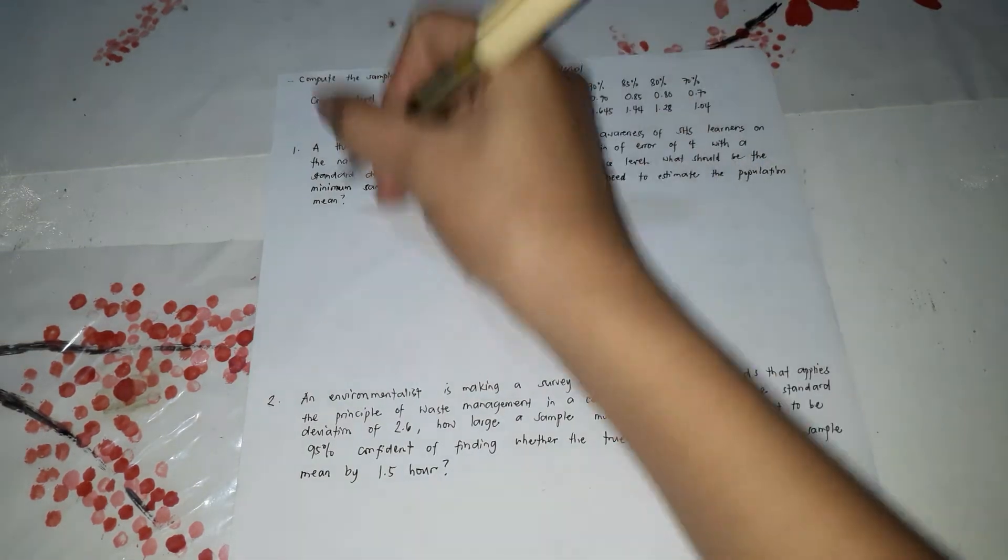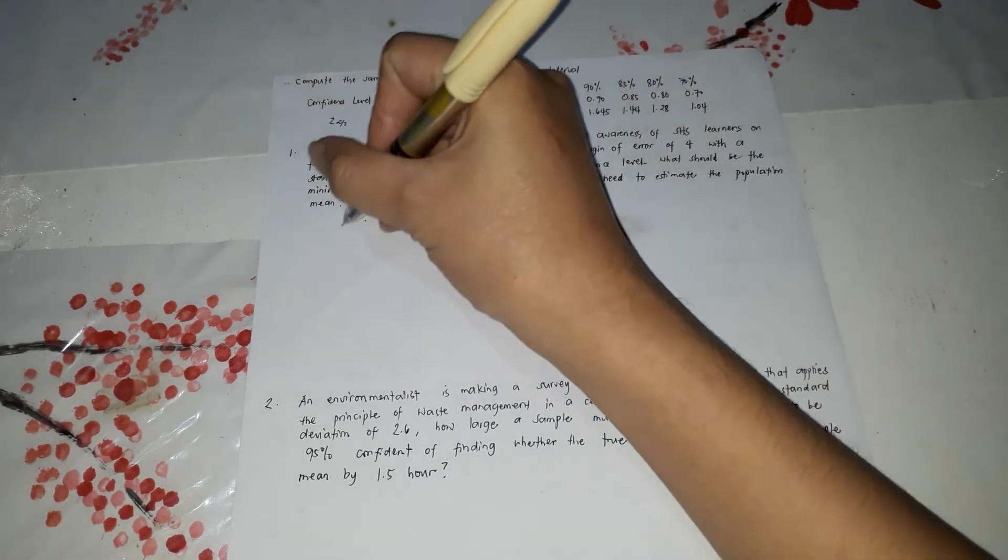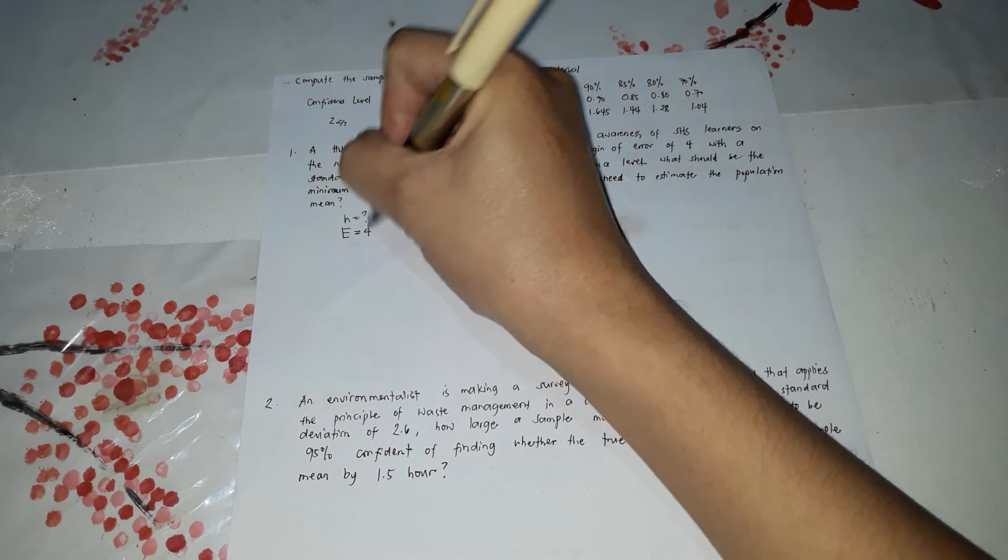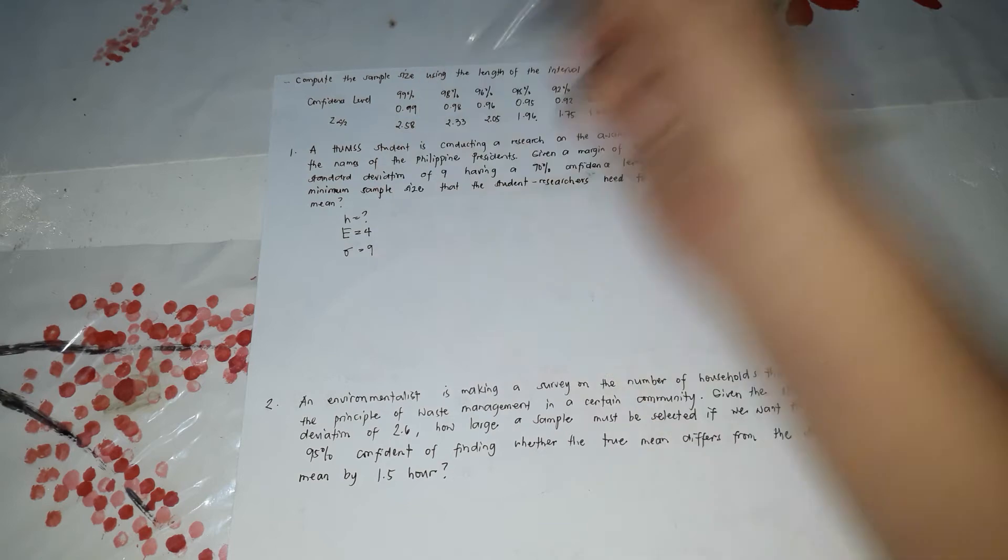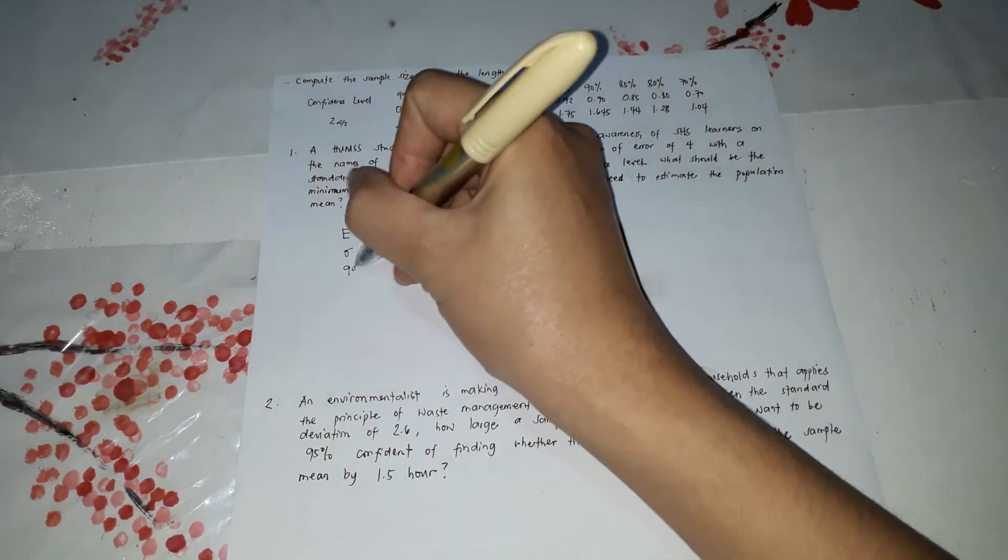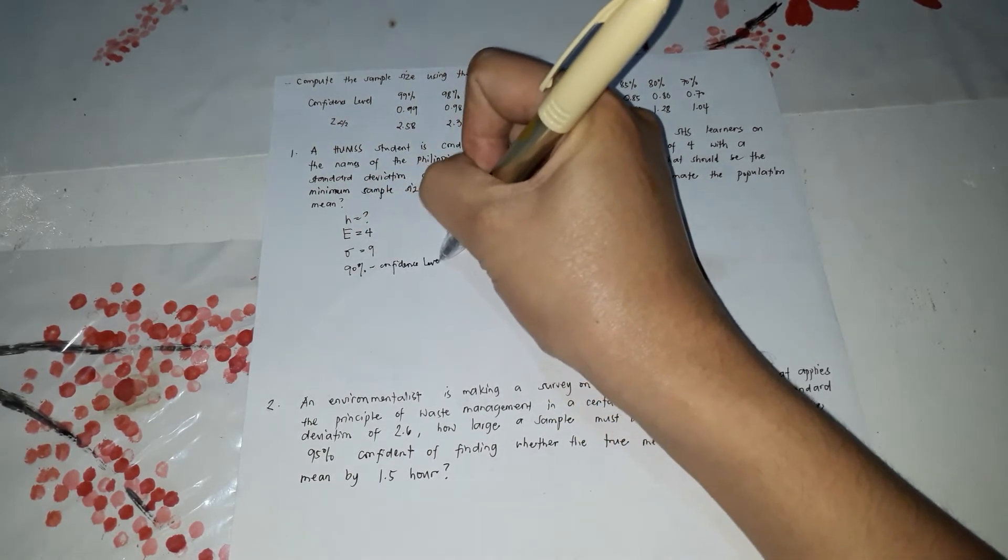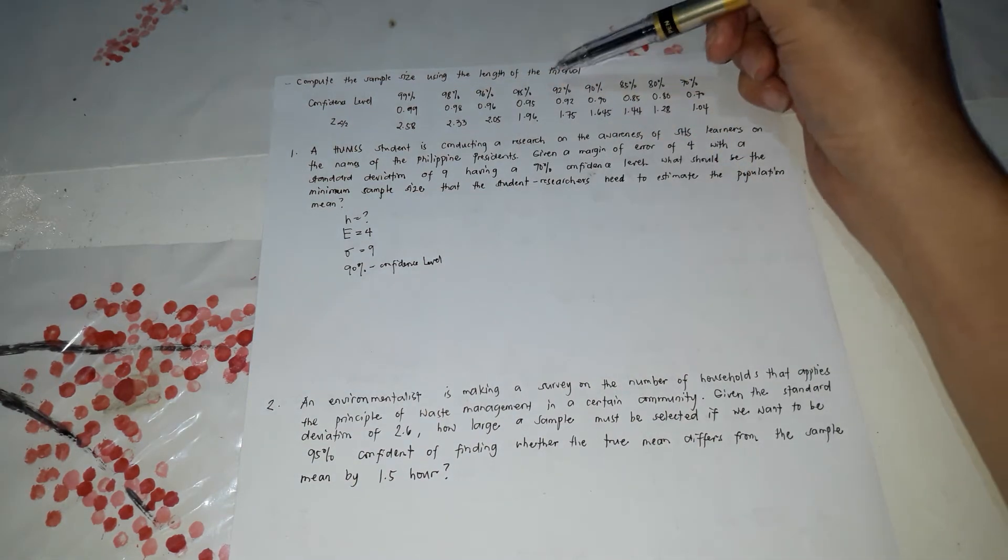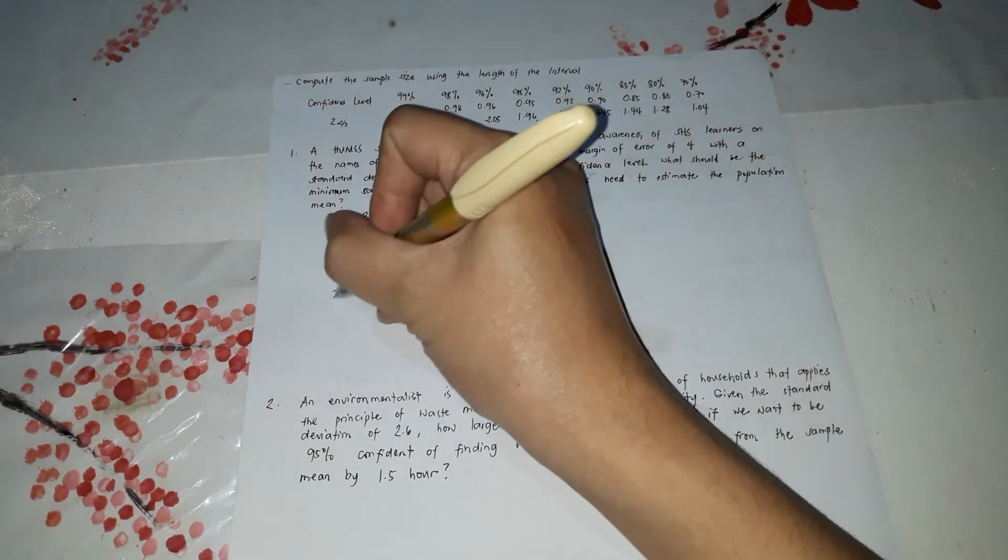So we're looking for N. First thing we need to do is identify the given. So the margin of error is 4. Next is the standard deviation of 9. The 90% is the confidence level. So based on our table, if it is 90%, the Z, the confidence coefficient is 1.645.